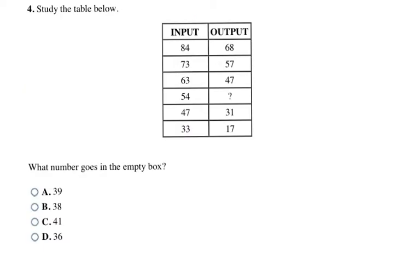Now I have a table. When I'm trying to find a pattern in a table, I'm going to look at each row. I'm going to look at how do I get from the input to the output. So here I have 84 and 68. They're going down, so I'm going to start with subtraction. And if the subtraction doesn't work, I'll look at division.